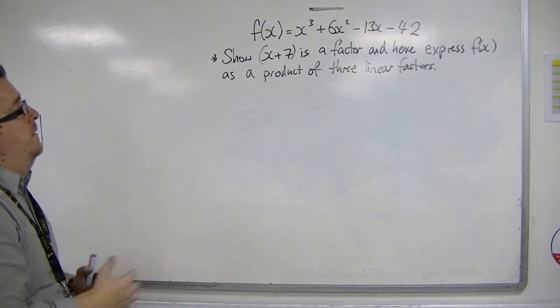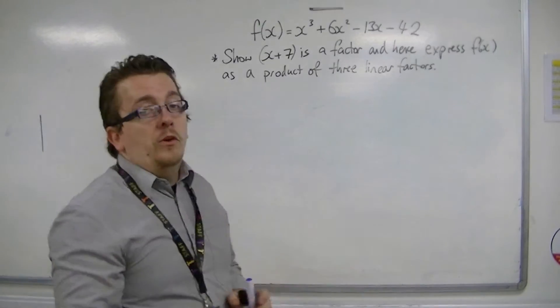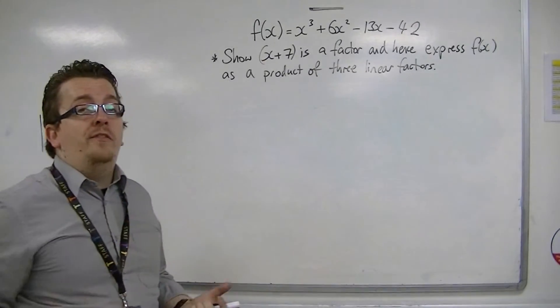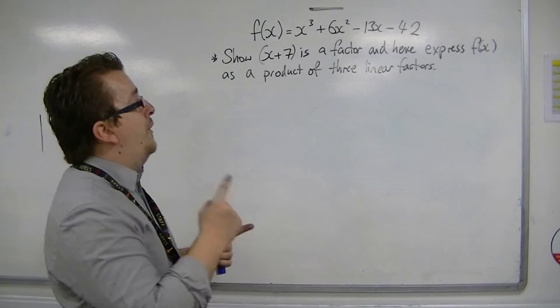Well, we're given one of the three. Show x plus 7 is a factor, so what we need to do is we need to show that it is a factor first, and then use that information to then find the other two.